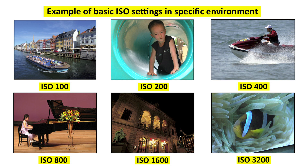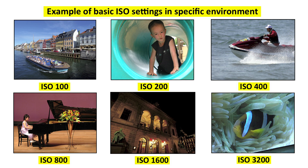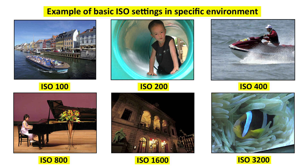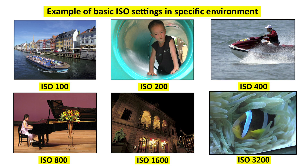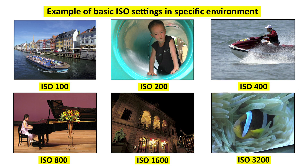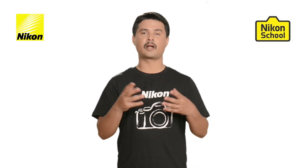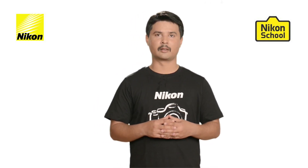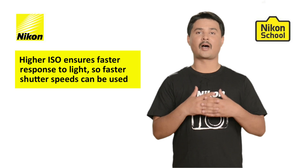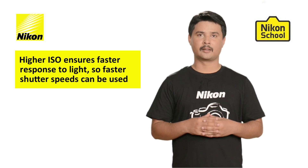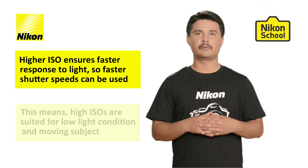Similarly, if you are shooting in a very low lighting situation, especially at night, ISO 1600 can give you very good output. If you are shooting in very, very low lighting where there is virtually no light, ISO 3200 or more can give better output. Now, higher ISO ensures faster response towards light, hence faster shutter speed can be used.